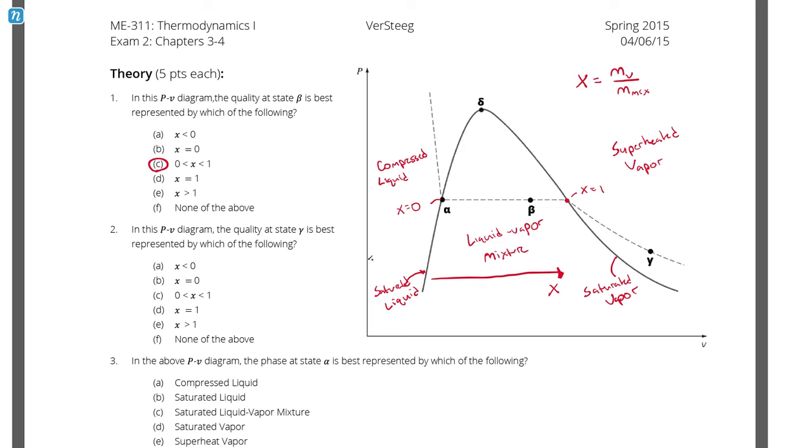Question 2. In this PV diagram, the quality at state gamma is best represented by which of the following? So gamma is over here. And a pretty common error here would be to say, well, 0 is over here. Then we're increasing it for a while. Eventually, we reach a point where quality is 1. So if we continue to go to the right, that means that the quality must increase, right? Therefore, quality is greater than 1? No. Because quality is a property that only makes sense when you're describing a saturated liquid vapor mixture.